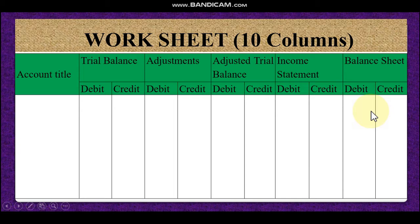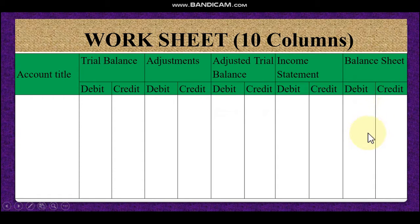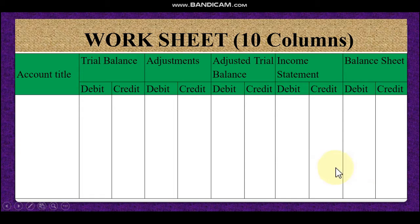Lastly, balance sheet. We have to prepare the balance sheet. From the debit balance, you know that in the debit side we have recorded asset and expenses, and out of those, expense goes to the income statement. Whatever asset we have, we will record in the balance sheet debit column. Liabilities will be in the credit side of the balance sheet, and both sides of the balance sheet will become equal. I hope, dear student, you understand how we will prepare the worksheet.